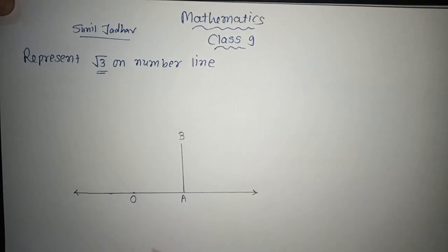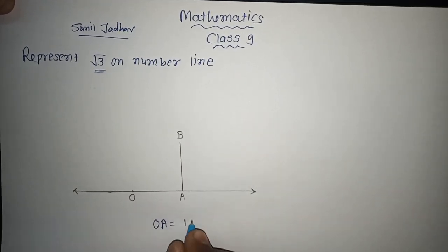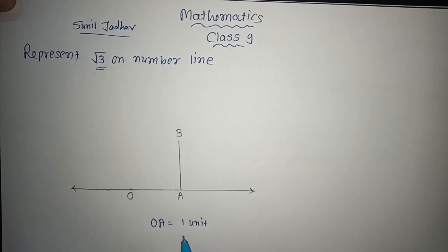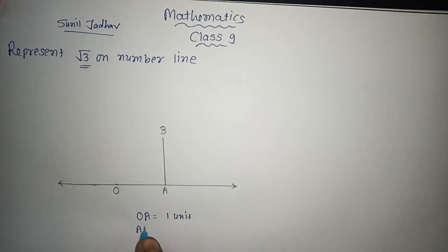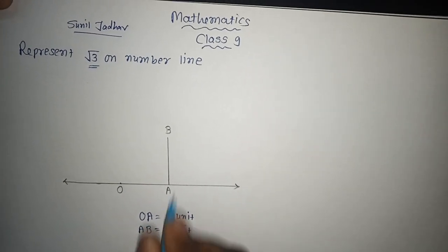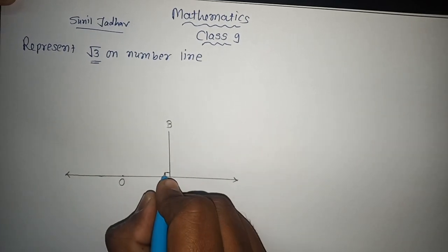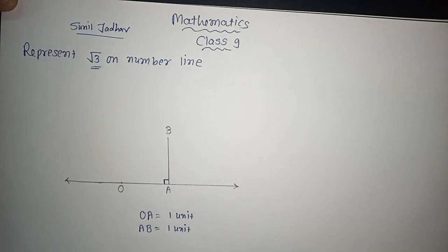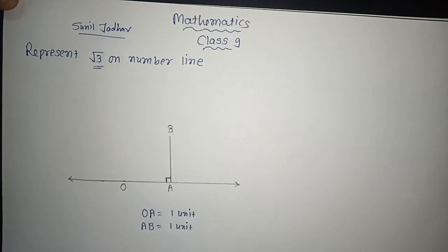So I have taken OA equal to 1 unit — remember, 3 centimeters is taken as 1 unit. Then I have to take AB also equal to 1 unit, meaning AB is also equal to 3 centimeters, and that should be perpendicular. Perpendicular means it should make a 90-degree angle along with OA. So you can see here this is also 3 centimeters that I have taken.